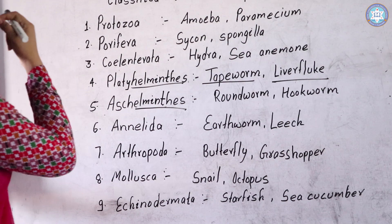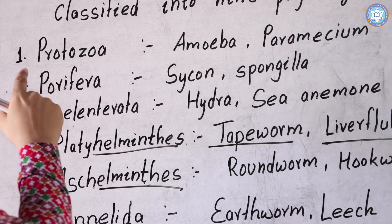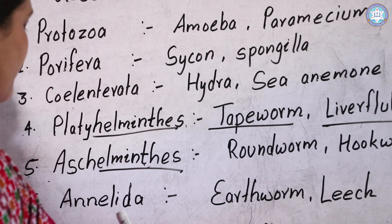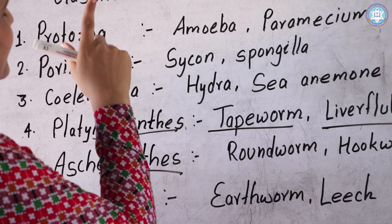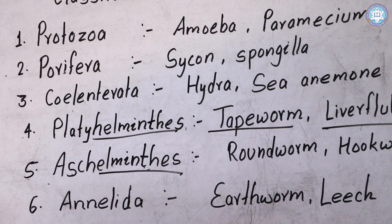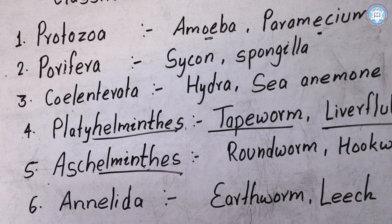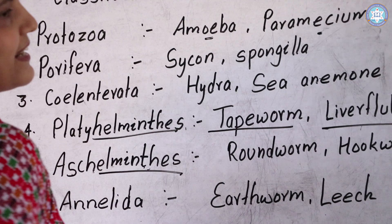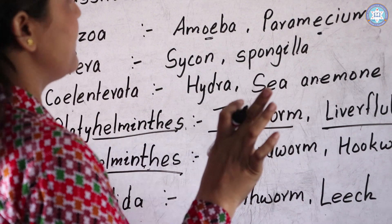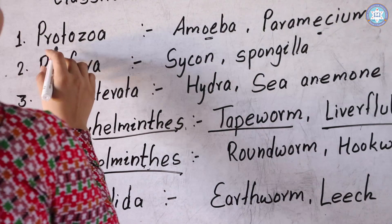Now we will read all the phyla with their examples. First is Protozoa, and the examples are Amoeba and Paramecium. These are microscopic animals — they are unicellular organisms, meaning we cannot see them with our naked eyes; we need microscopes to see them.